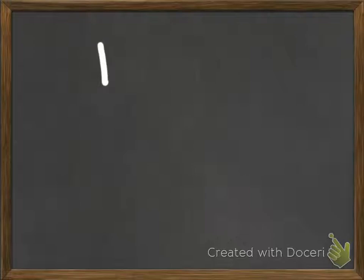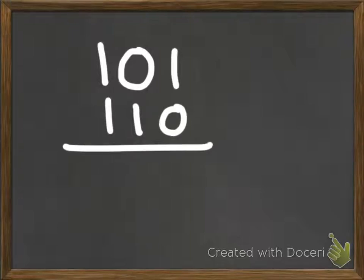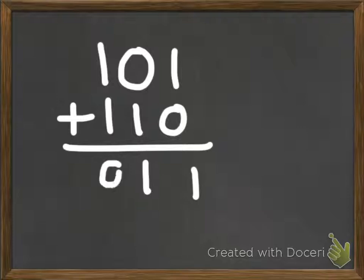Let's look at one more example: 101 added with 110. Keep the rules in mind — one plus zero is one, a one plus a zero is still one regardless of order, and a one plus a one is a one-zero with the one carrying over. And that's your result.